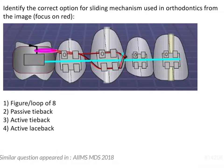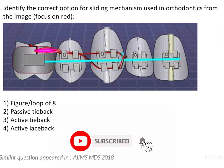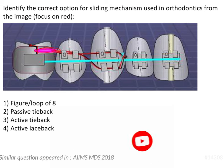Let's have a look at the image given in this question. We notice that there is an elastomeric module present on the hook of the molar tube. There is a ligature wire passing through the module, bypassing the premolar and getting engaged onto the canine. This is actually an example of an active tie back.